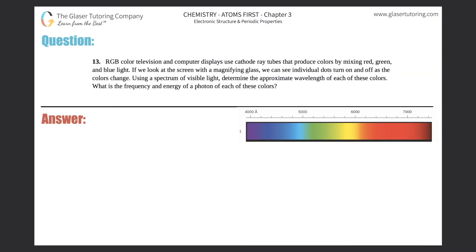Number 13. RGB color television and computer displays use cathode ray tubes that produce colors by mixing red, green, and blue light. If we look at the screen with a magnifying glass we can see individual dots turn on and off as the colors change. Use a spectrum of visible light to determine the approximate wavelengths of each of these colors. What is the frequency and energy of a photon of each of these colors?